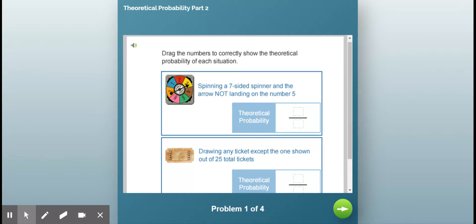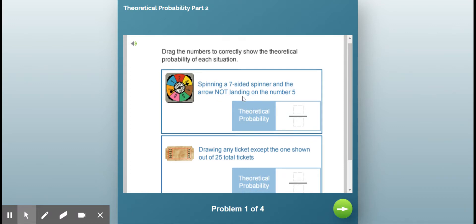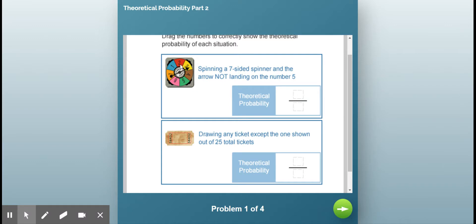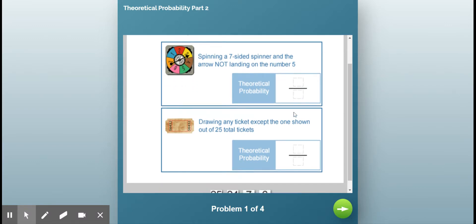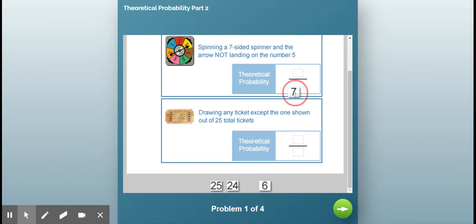So let's look at this. So I want to spin a seven-sided spinner, and the arrow will not land on the number five. So I automatically know that there are seven outcomes. So my total number of outcomes is seven. That doesn't change.